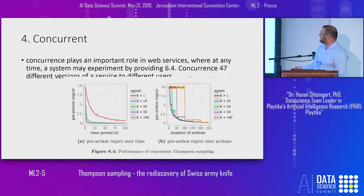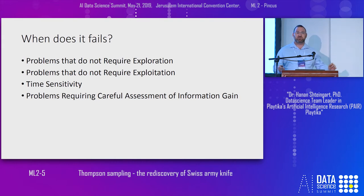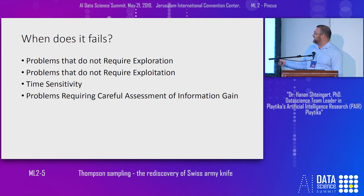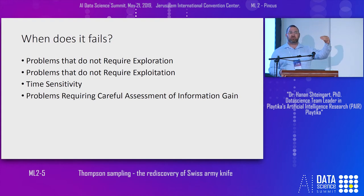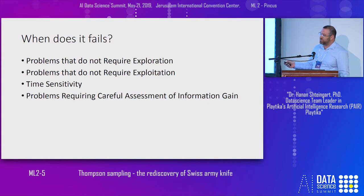When does Thompson Sampling fail? It fails when we don't really care about exploration, when we don't care about exploitation, and when we are very time-sensitive — if the horizon of making decisions is very small, it may be better to just exploit. It also fails when there are hints in the data giving you more information than you might expect.